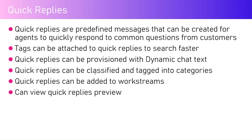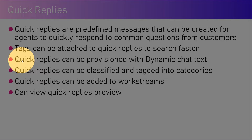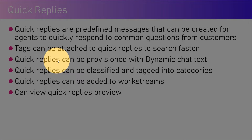Tags can be attached to quick replies to search faster. Imagine a situation where you have hundreds of quick replies configured in your system — you can't remember all of them. Tags are a quick way to identify the right quick reply and send it to the customer. Quick replies can also be provisioned with dynamic chat text, so it need not be hard-coded. You can specify the agent name, customer name, and other dynamic parameters.